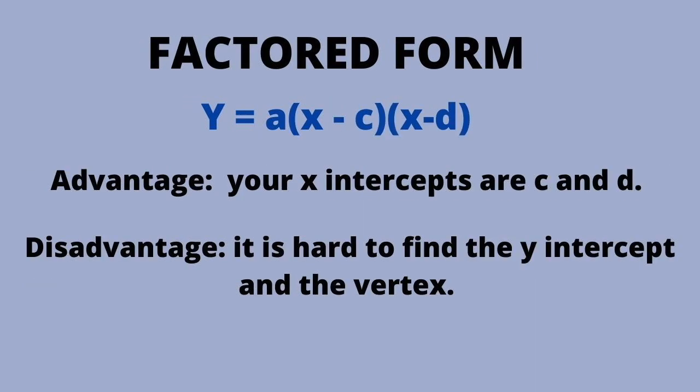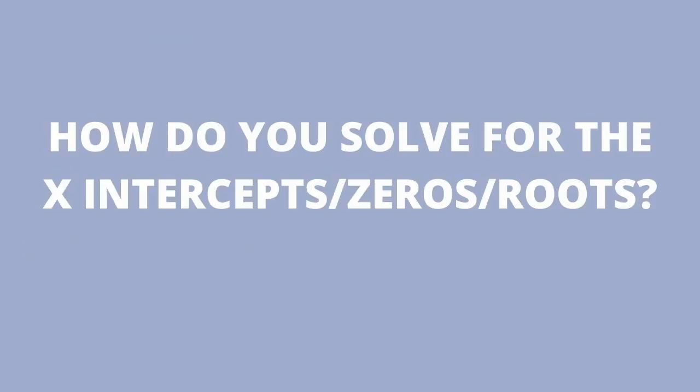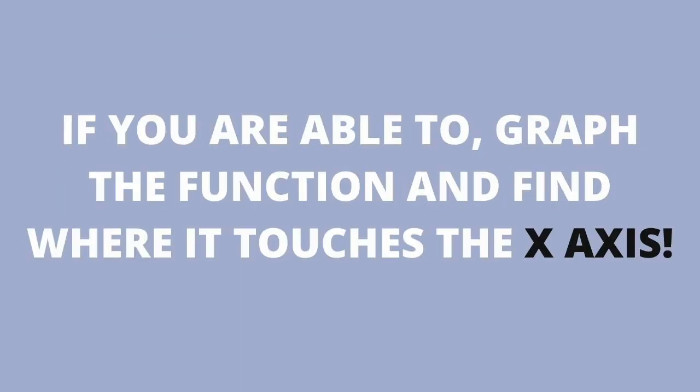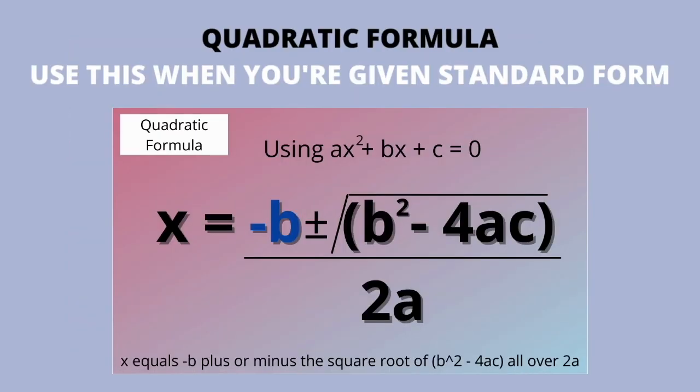How do you solve for the zeros? You could graph it with a calculator and see where it intersects the x-axis. And we cannot forget: x = (-b ± √(b² - 4ac)) / 2a.